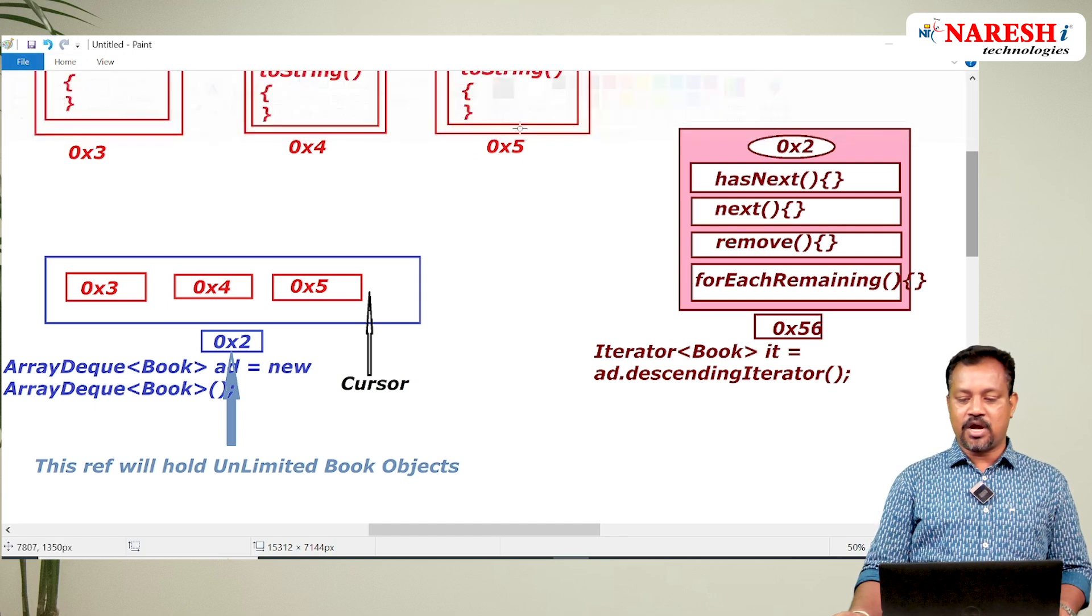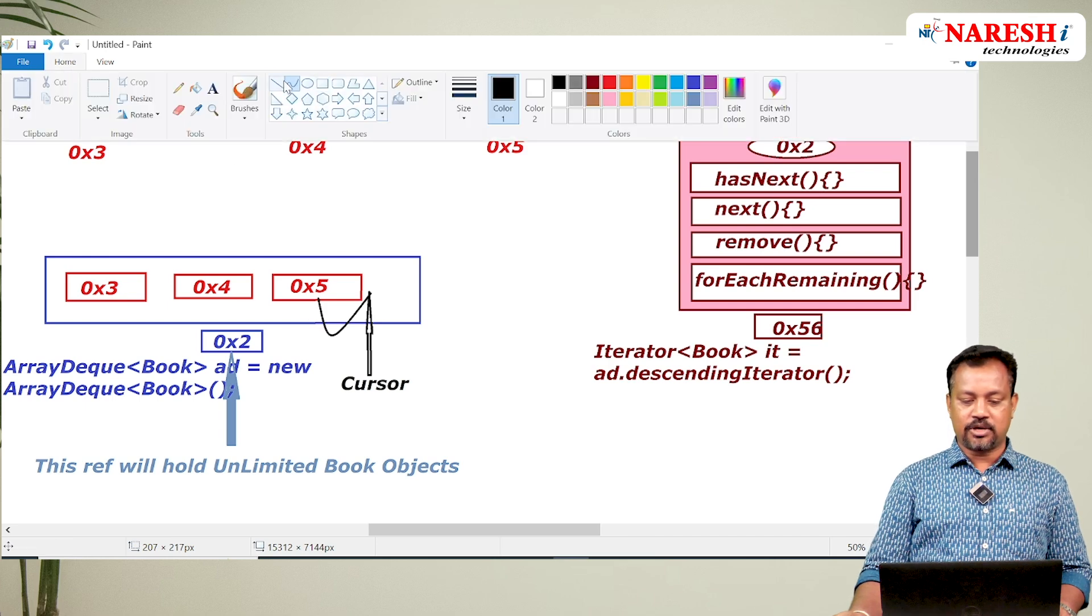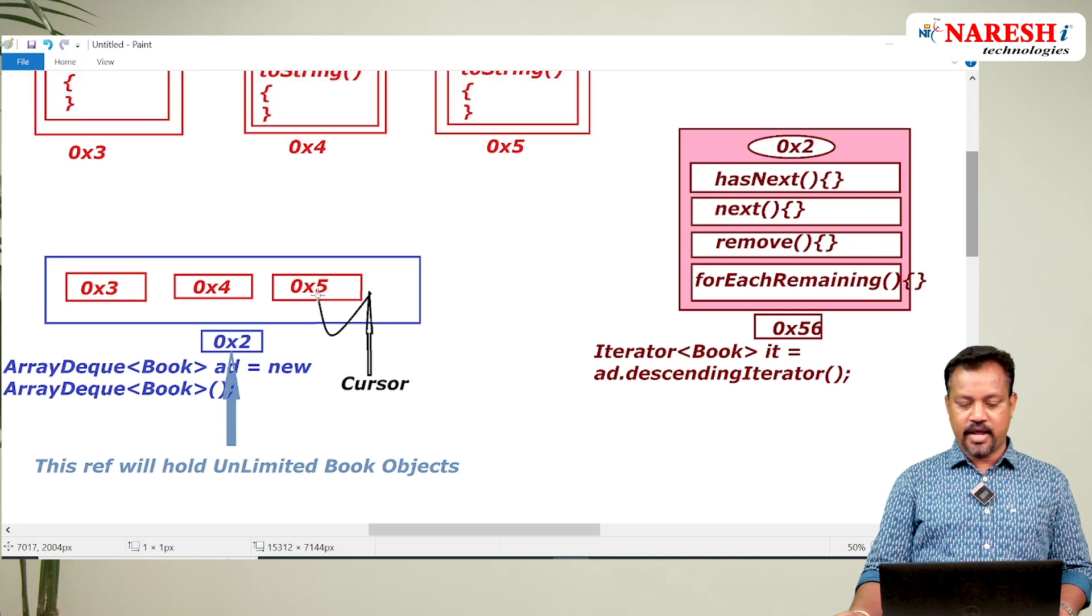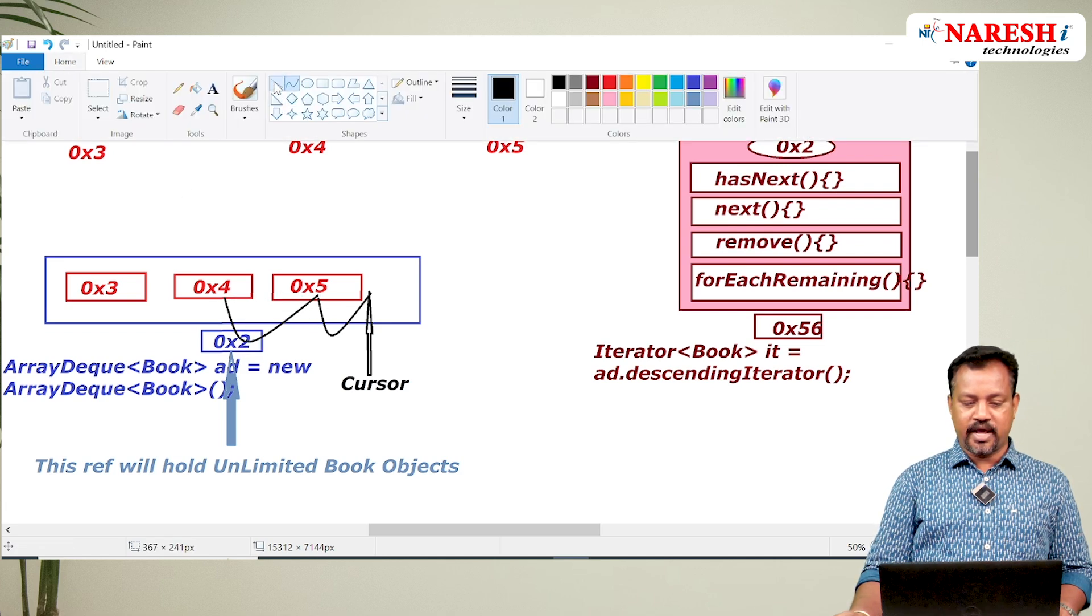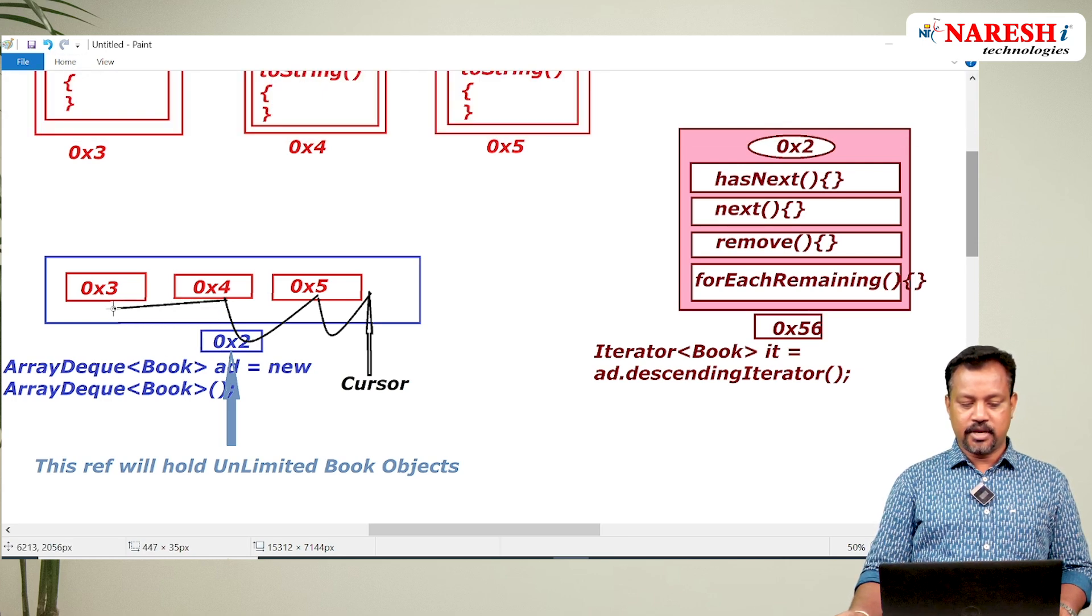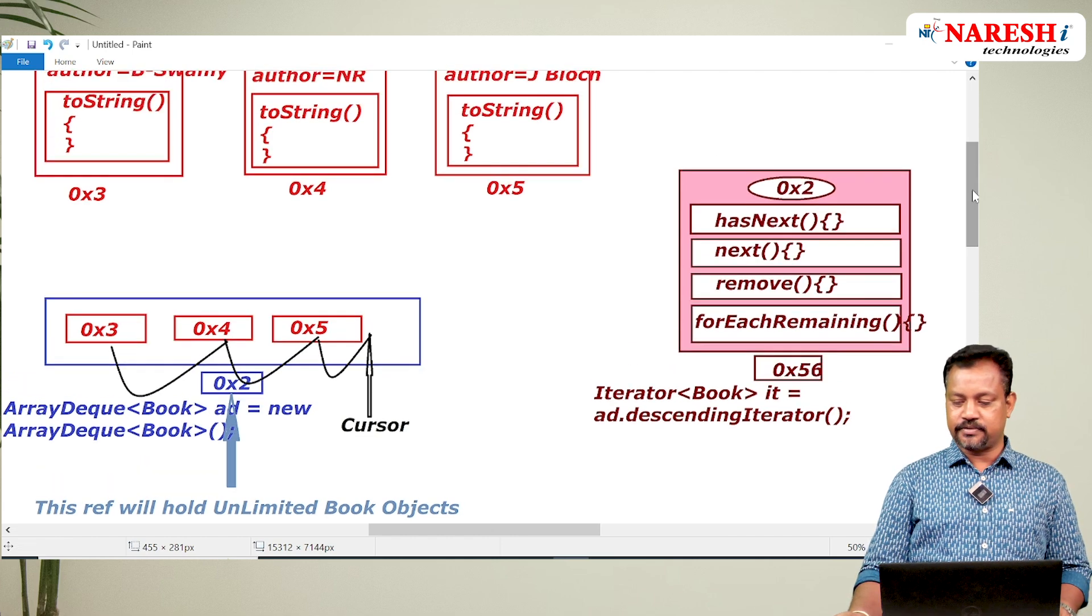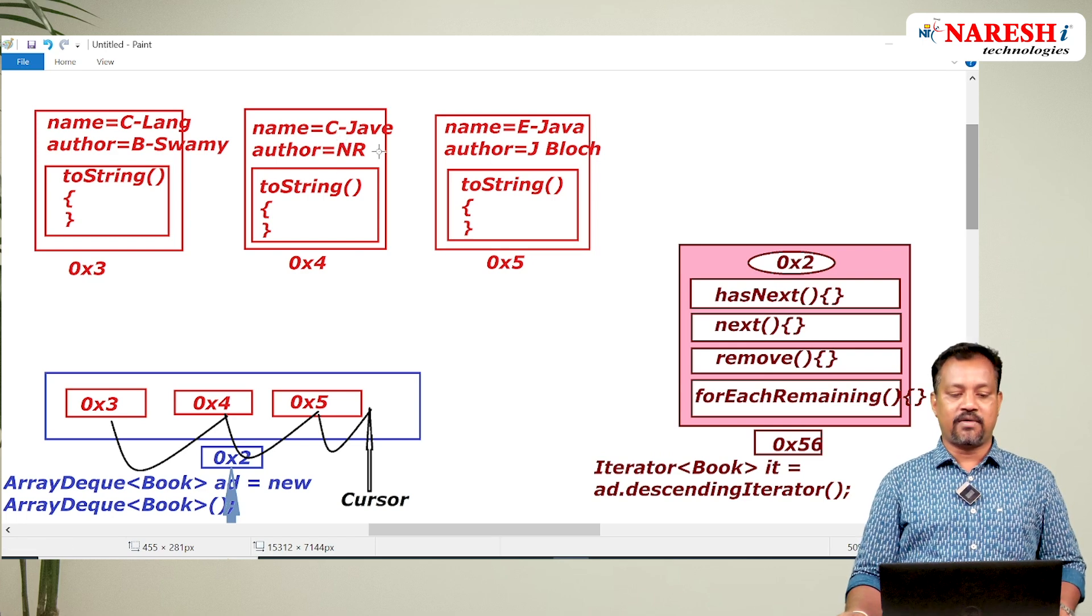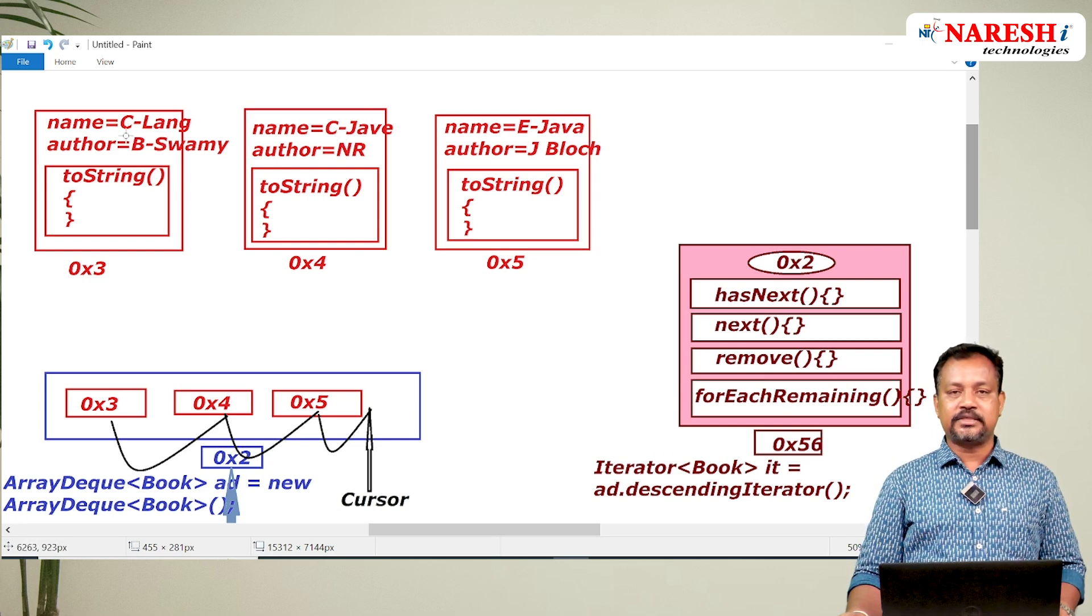Whenever I run the program now, the cursor will be moving in the backward direction. The cursor moves in backward direction. When the cursor moves in backward direction, the elements are displayed in the backward. In your display you can see: first book displayed is Effective Java, second book displayed is Core Java, third book displayed is C Language.